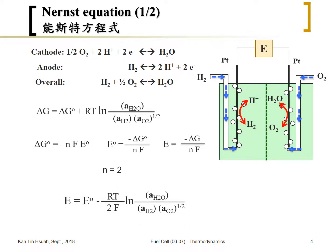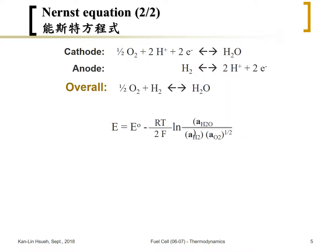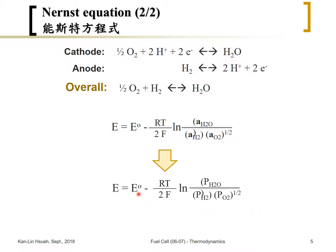Taking all this into account, we can calculate the cell voltage as a function of reactant activities. At low pressure, the activity is approximately equal to the partial pressure — the hydrogen pressure, oxygen pressure, and water vapor pressure — so those activities can be written as pressures. The effect of pressure on cell voltage can be calculated from this equation, and at other temperatures we can correlate using the method from the previous section.